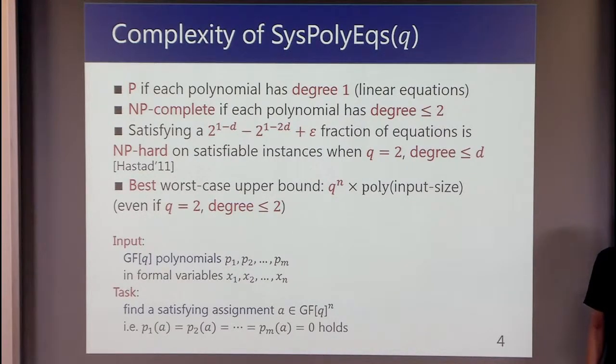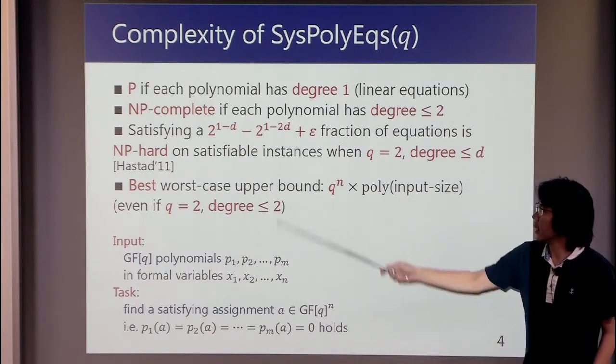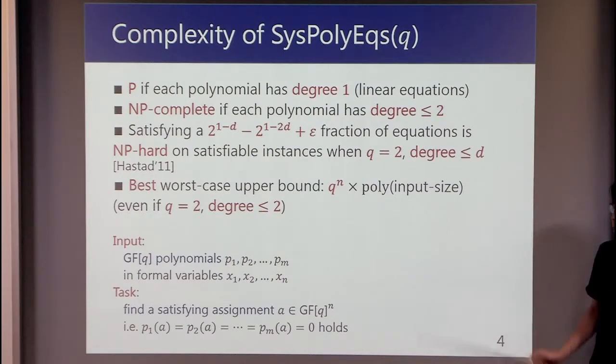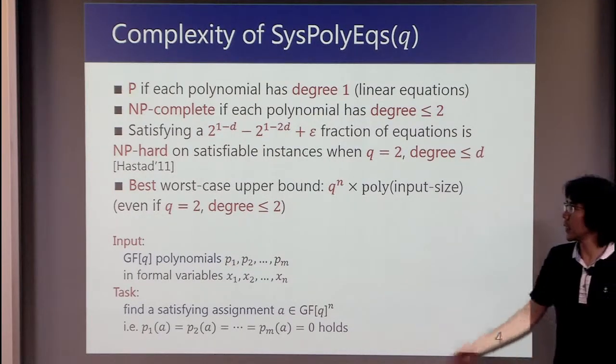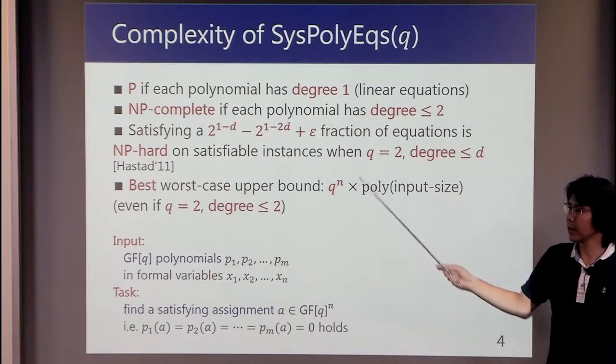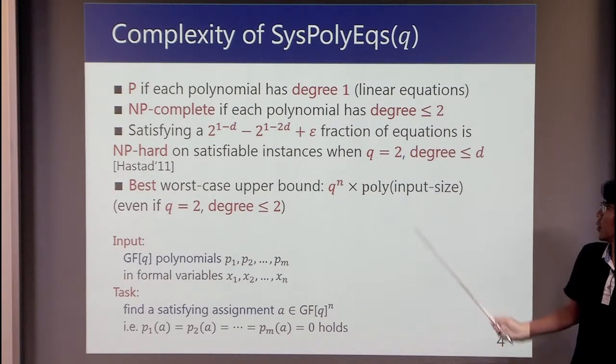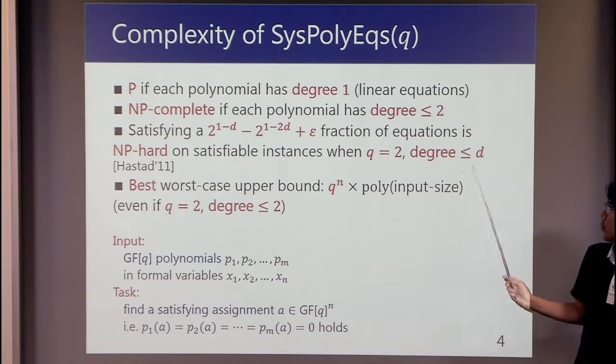The problem is NP-complete if each polynomial has degree at most two. And in addition, satisfying this fraction of equations is NP-hard on satisfiable instances even when q is 2 and degree is at most d.